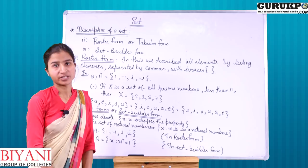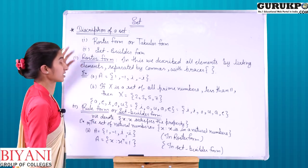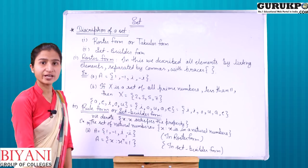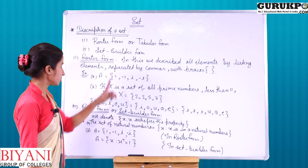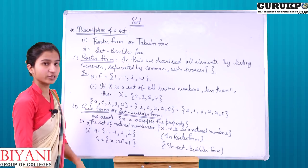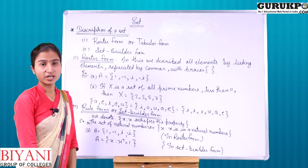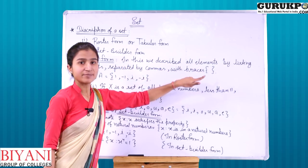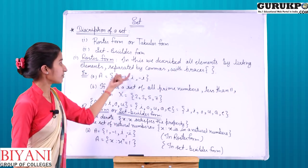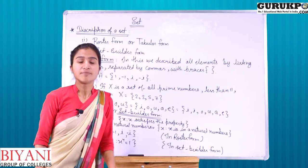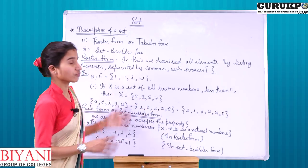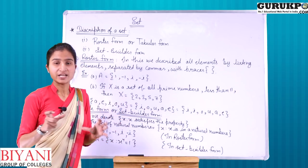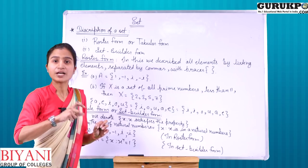How to represent a set? There are two forms. First, the Roster Form, which is also called the Tabular Form. Second, the Set Builder Form, which is also called the Rule Form. In Roster Form, we describe all elements by listing them separated by commas within curly brackets. That means, in curly brackets, all elements are written separated by commas.